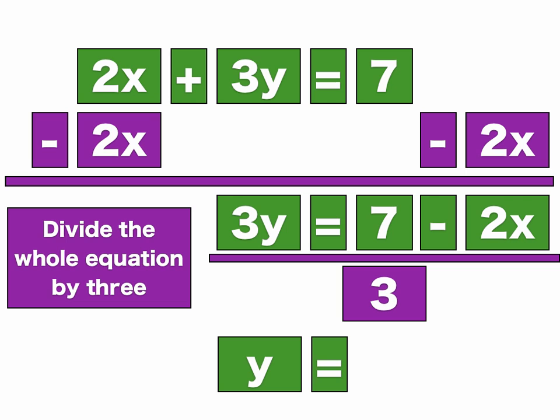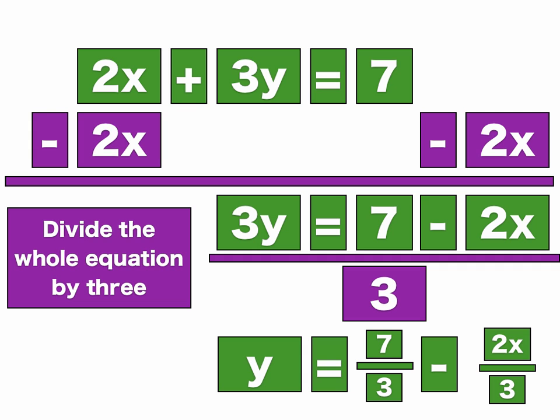And then 7 divided by 3, that doesn't go on equally, so we'll just say it's 7 thirds. And then minus, we bring down the minus, and 2 divided by 3 is 2 thirds x, basically. So we have 2 thirds x.